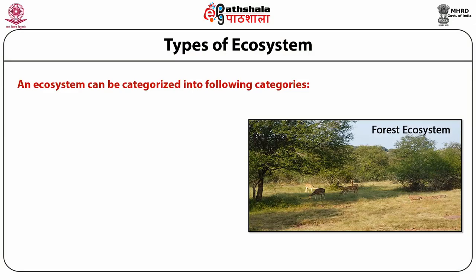Types of ecosystem. An ecosystem can be natural or artificial, temporary or permanent, large or tiny. Thus, ecosystem can be categorized into the following categories.